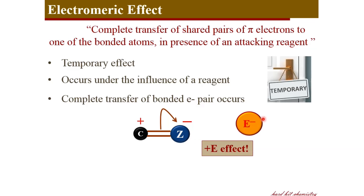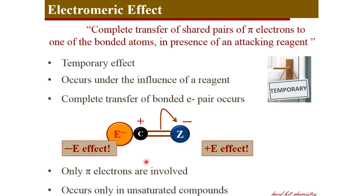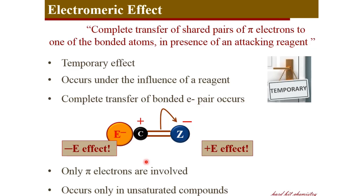On the other hand, if the reagent were negatively charged, it can go and attach to this carbon atom which is having positive charge. That will be negative electromeric effect, where the attacking reagent attaches to that atom away from which the electron displacement occurs. Only pi electrons are involved in this electromeric effect, so only unsaturated compounds exhibit electromeric effect. There are two effects: plus E and minus E effect.